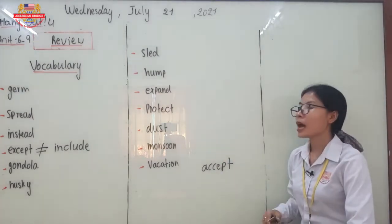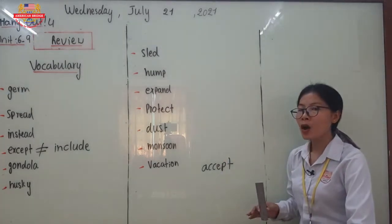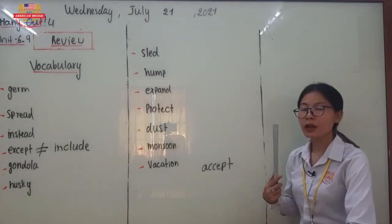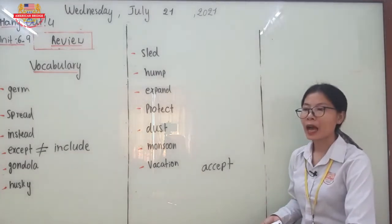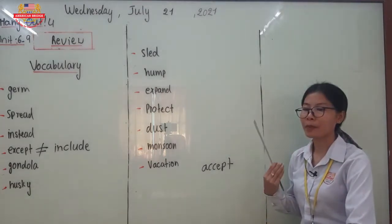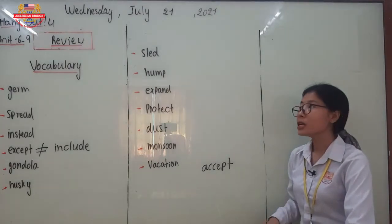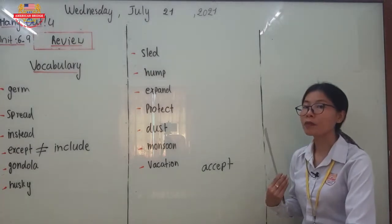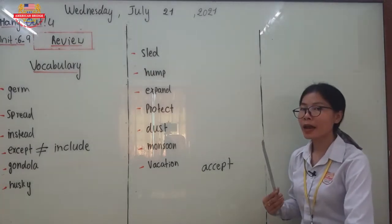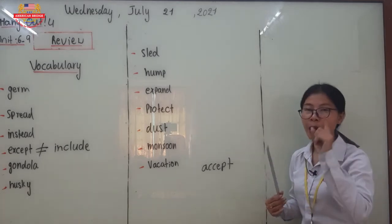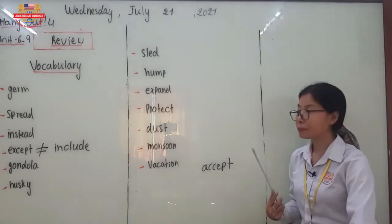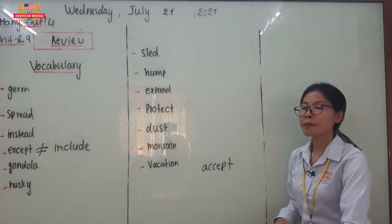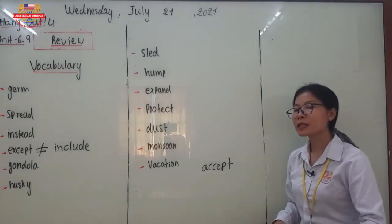Let's go to the word 'hump.' Hump refers to a part of the body of a camel. Camels use their humps to store water or food. Some camels have two humps and some animals have only one hump.